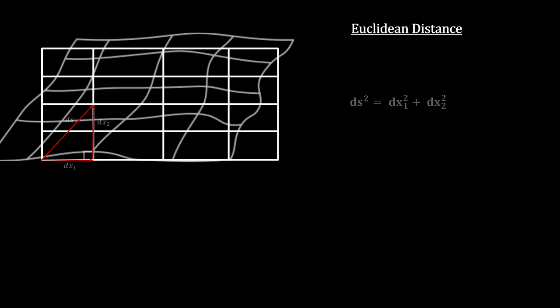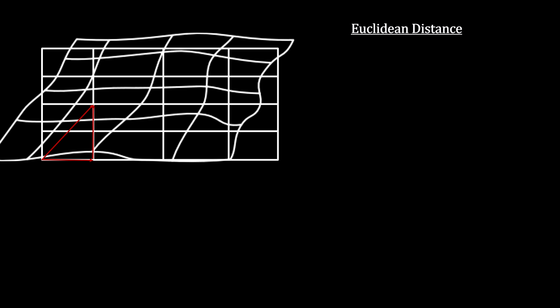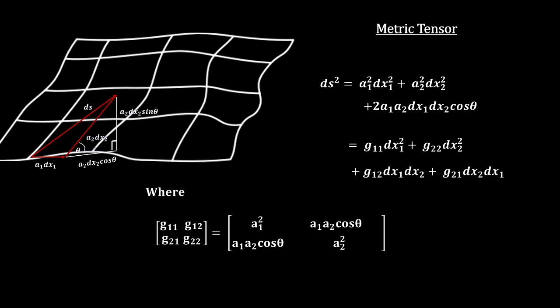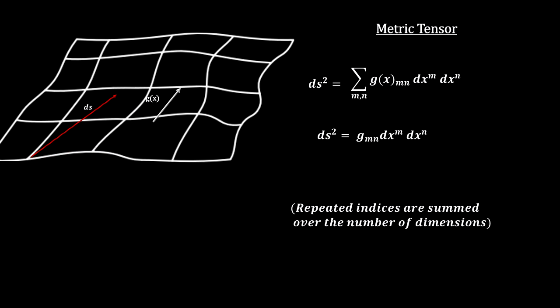We then generalize by adding coefficients to take into consideration the different scales on lines in different directions and the fact that the lines no longer cross to form right angles. This is called a metric tensor. And finally, we extend the number of dimensions and generalize the coefficients to be functions of a location to take into account curved and changing coordinate systems.